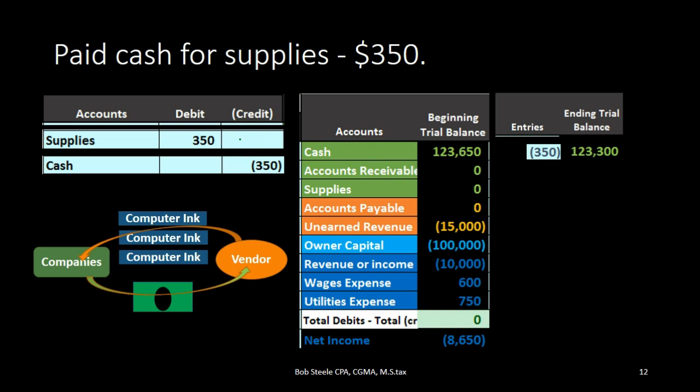You might ask why supplies is an asset up in the green area rather than supplies expense down in the dark blue area. We're assuming we'll purchase the supplies and treat it like inventory — capitalizing it as an asset and then expensing it as we use it, in accordance with the matching principle. If it were a very small purchase like paperclips, we'd expense it directly to supplies expense. But if it's a large, material amount, under the accrual matching method we put it on as an asset and expense it as it's consumed.